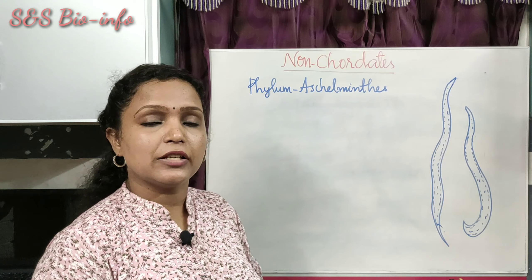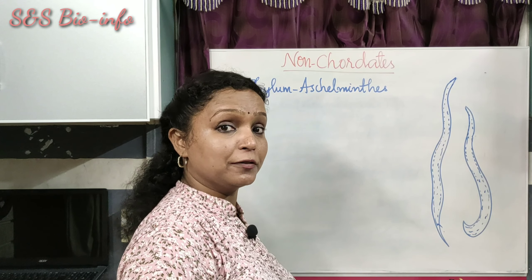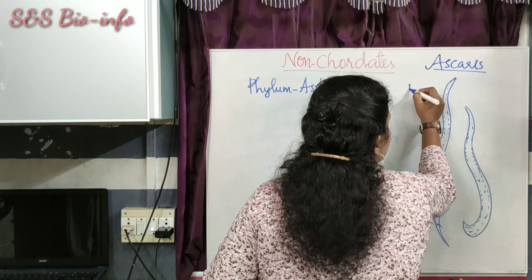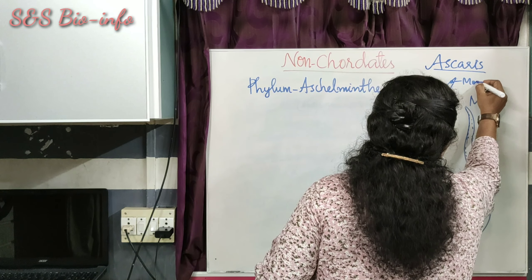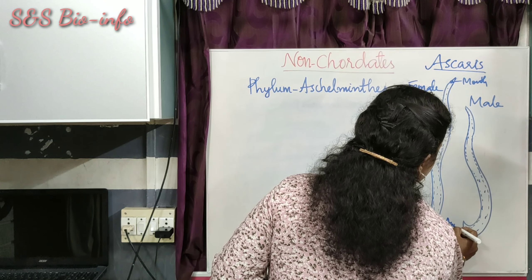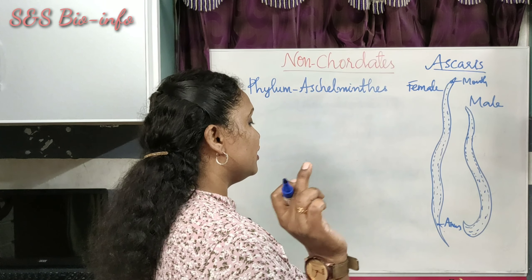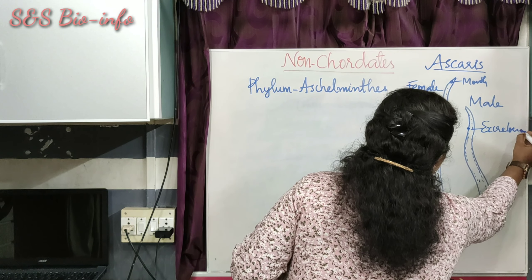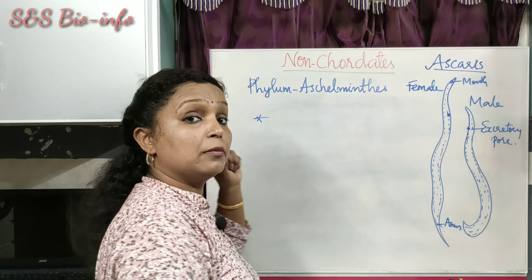Now the specific features of this phylum: they have a complete digestive system, meaning both mouth and anus are present. Looking at the diagram of the roundworm Ascaris — the female Ascaris and the male Ascaris both possess mouth and anus, so the digestive system is complete. They also have an excretory pore located anteriorly. However, they do not have a well-developed circulatory system or respiratory system.